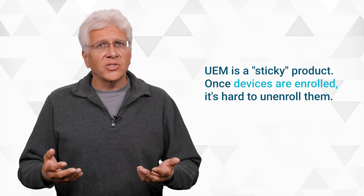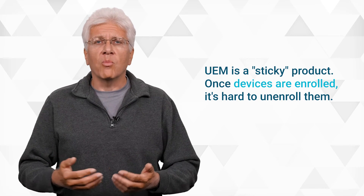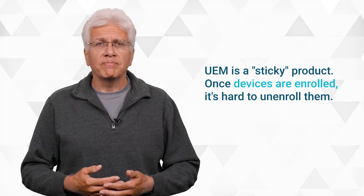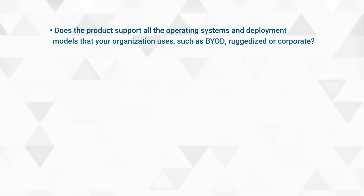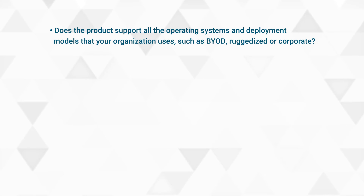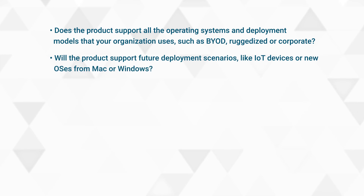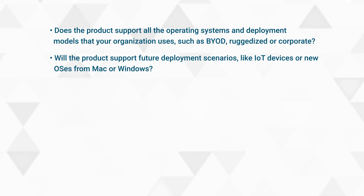So that's what UEM is and how it works. But how do you find the right one for your organization? Tread carefully, because UEM is a sticky product — once devices are enrolled, it's hard to unenroll them without in-person support. There are a few questions you should ask of any vendor. Does the product support all the operating systems and deployment models your organization uses, such as BYOD, ruggedized, or corporate? Will the product support future deployment scenarios like IoT devices or new OSs from Mac or Windows?